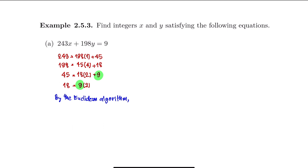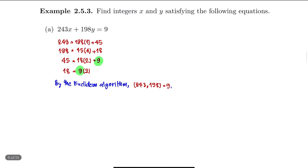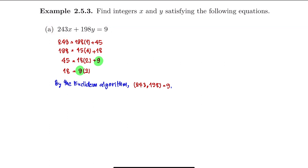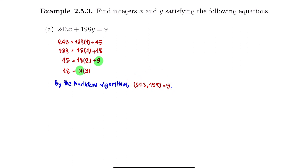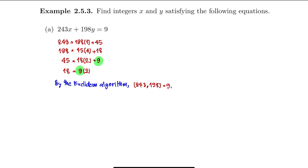The greatest common divisor of 243 and 198 is 9. Now we try to find integers X and Y satisfying this equation, namely we need to find Bézout's identity for this greatest common divisor. We start with the equation next to the last one and try to write 9 from it.